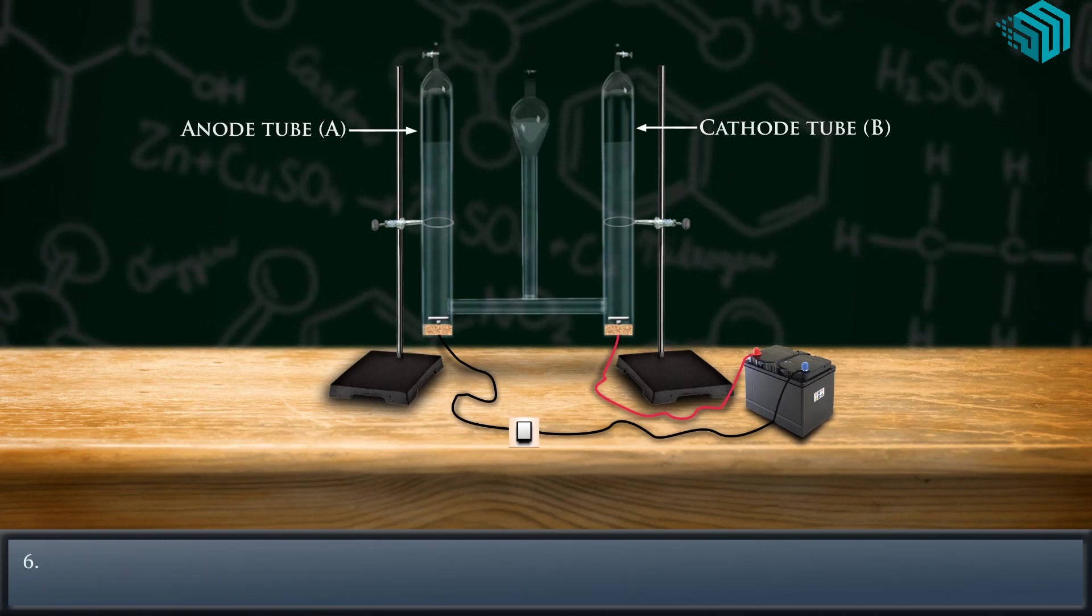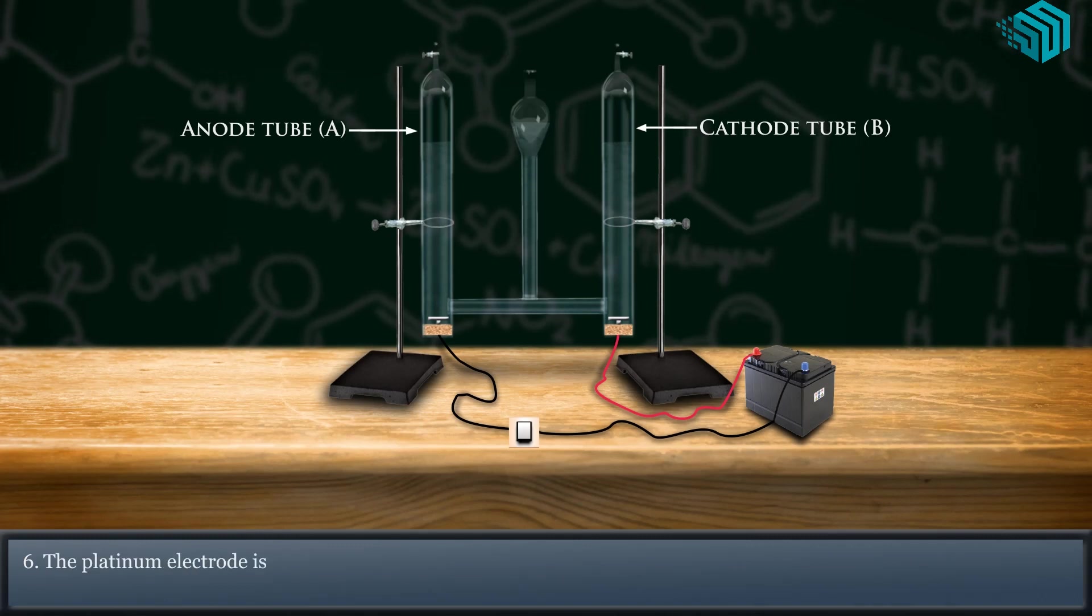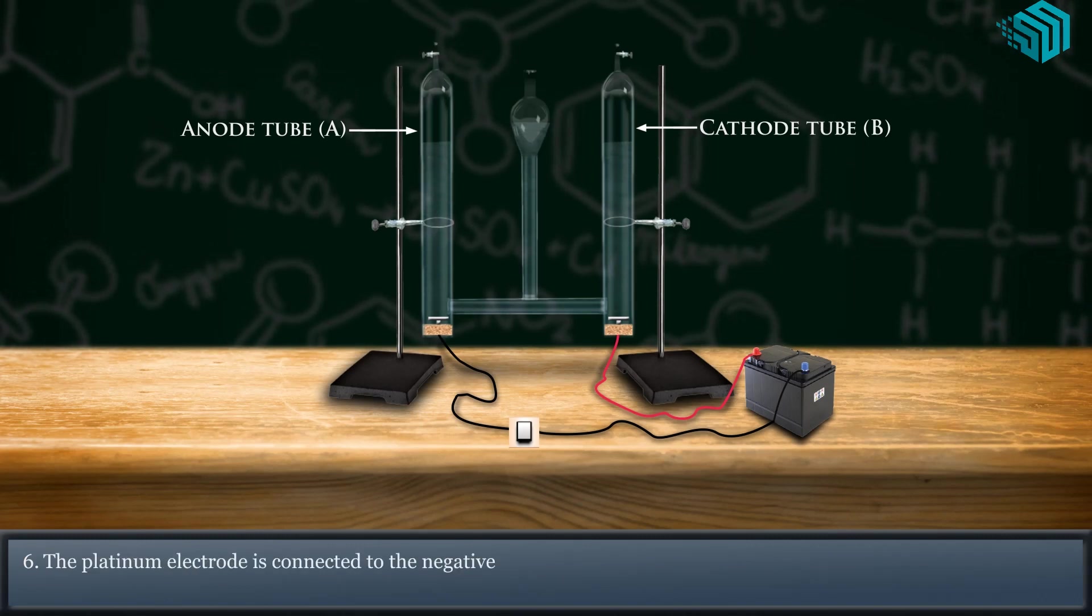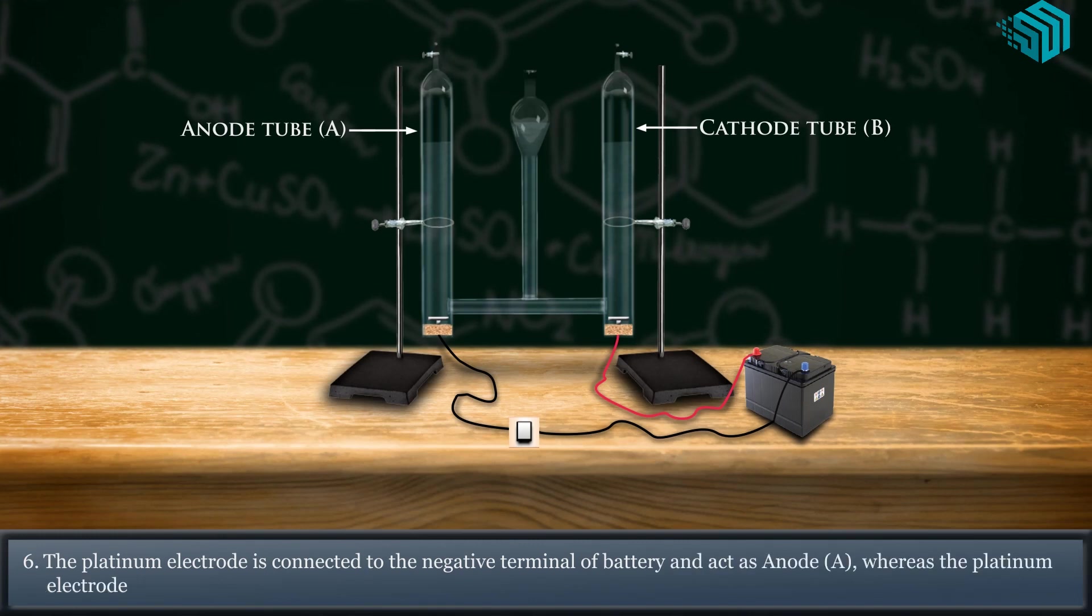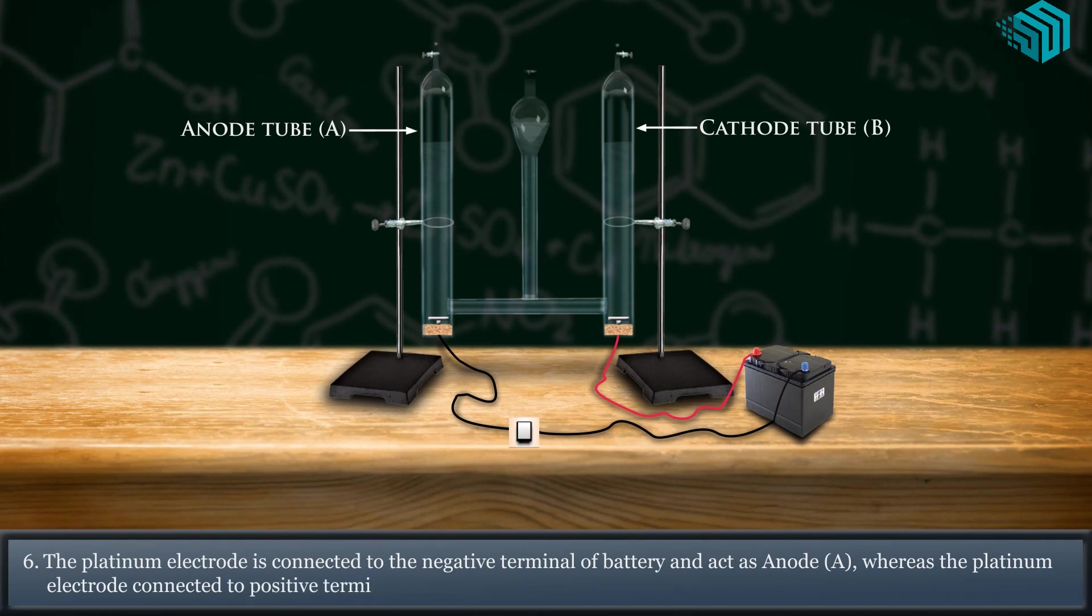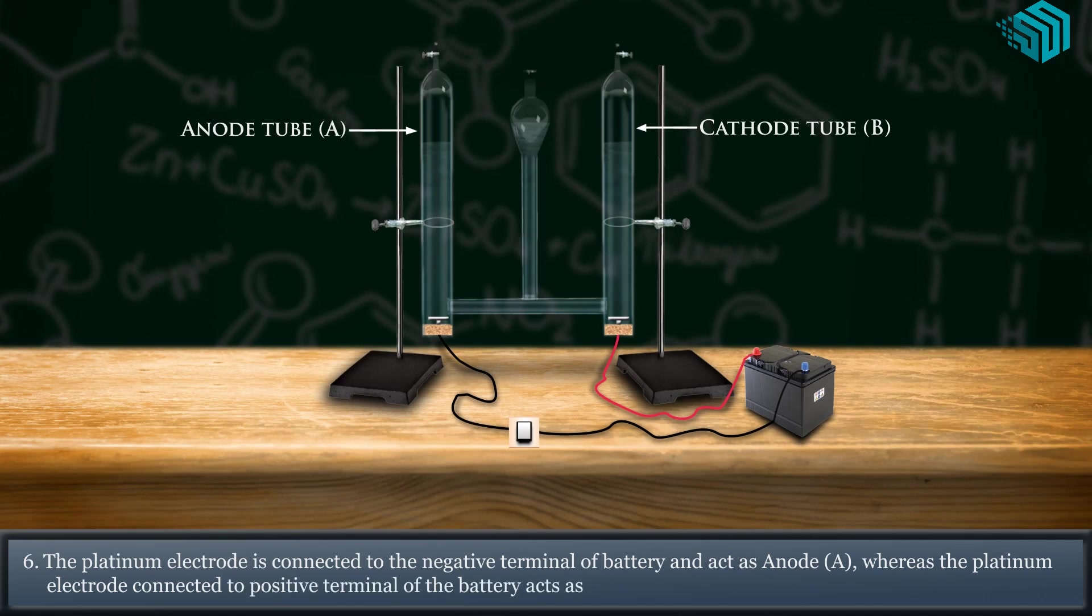The platinum electrode is connected to the negative terminal of battery and act as anode A, whereas the platinum electrode connected to positive terminal of the battery acts as cathode B.